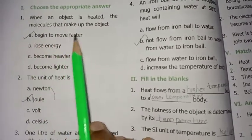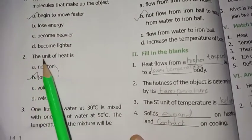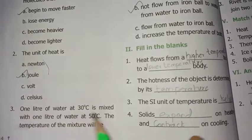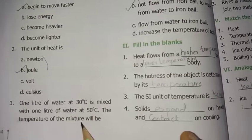Second, the unit of heat is B, Joule. Third, one liter of water at 30°C is mixed with one liter of water at 50°C, the temperature of the mixture will be D, around 40°C.